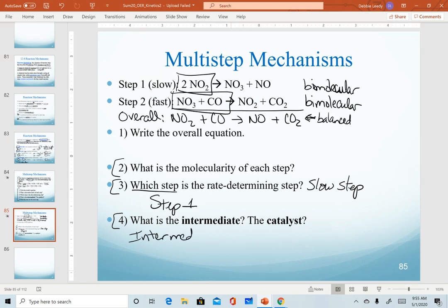For question number four, we want to identify the intermediate and the catalyst. I'm going to go up to the top and erase my notes here. An intermediate is a substance that has to be produced in one step. So it is first a product, and then a reactant in the next step. The idea with an intermediate is, for example, in step one, notice that we make NO3 here. NO3 is not part of the overall equation. But if I don't produce NO3 in the first step, it can't be used up in the second step. In other words, step two couldn't happen if we didn't make NO3.